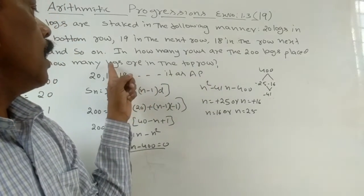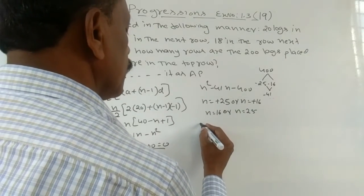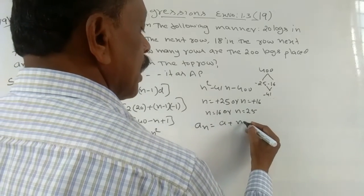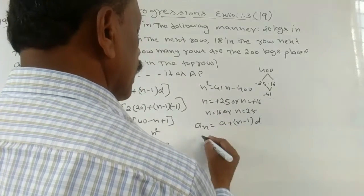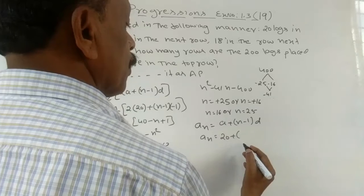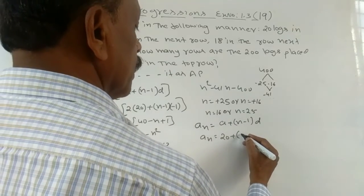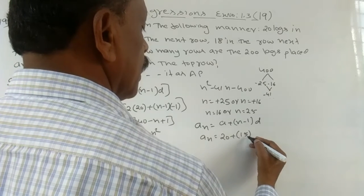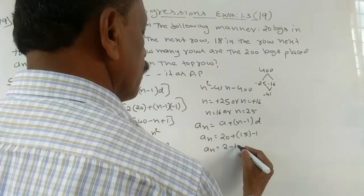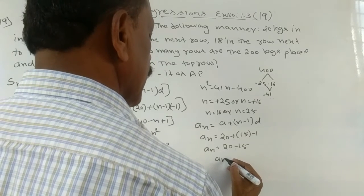To find the number of logs in the top row, we find an. That is a plus (n−1) × d. For n equal to 25: an = 20 + (25−1) × (−1) = 20 + (24)(−1) = 20 − 24, which gives an equal to minus 4. This has no meaning, so n equals 25 is rejected. For n equal to 16: an = 20 + (16−1) × (−1) = 20 − 15 = 5.